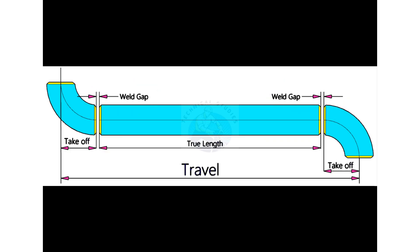So, how do we calculate the true length of the spool? The true length or cut length is calculated by adding two welding gaps and two take-offs, then subtracting this sum from the travel length.